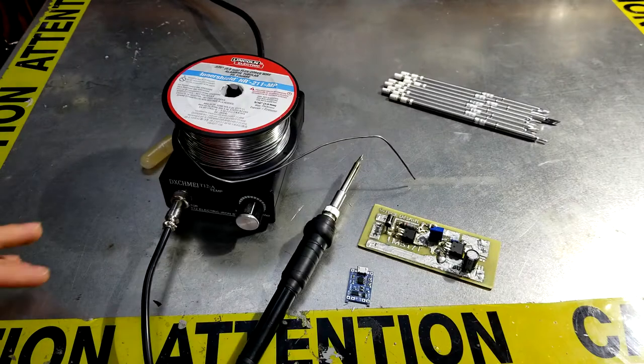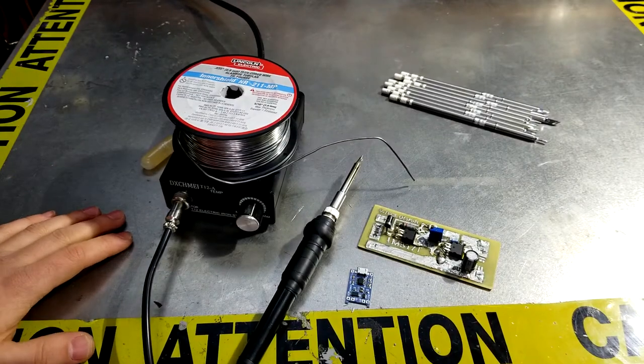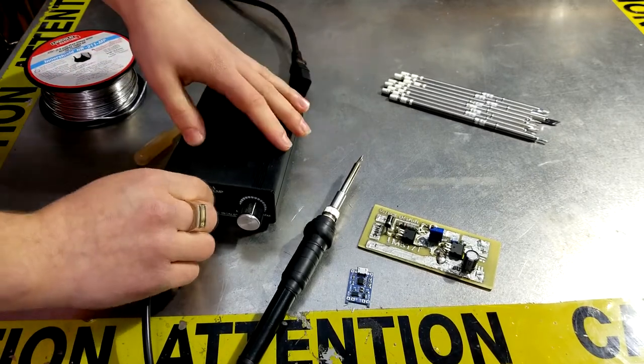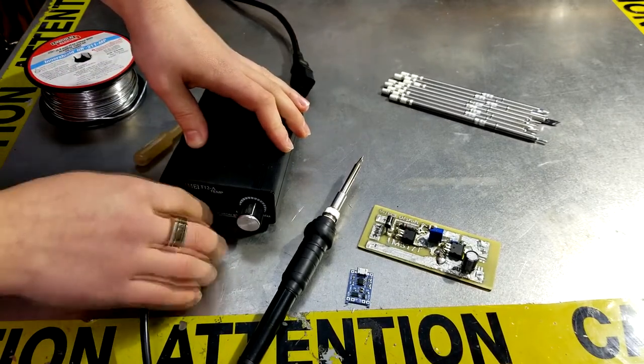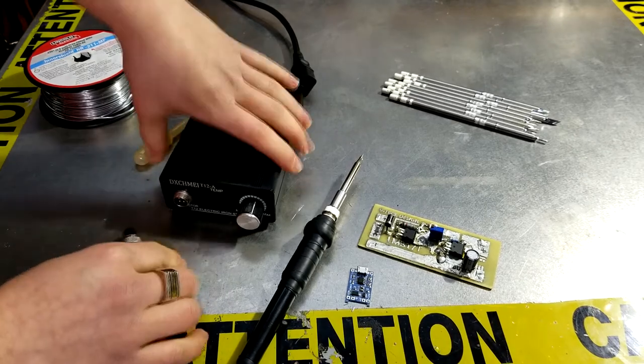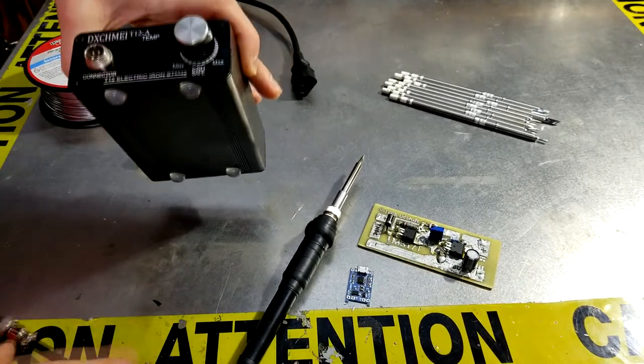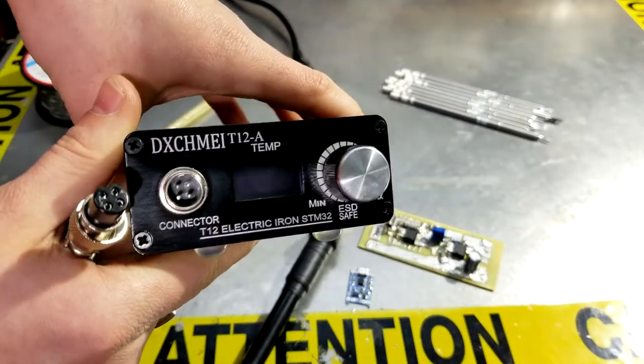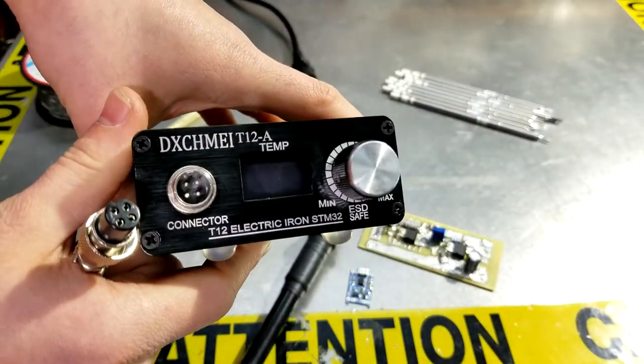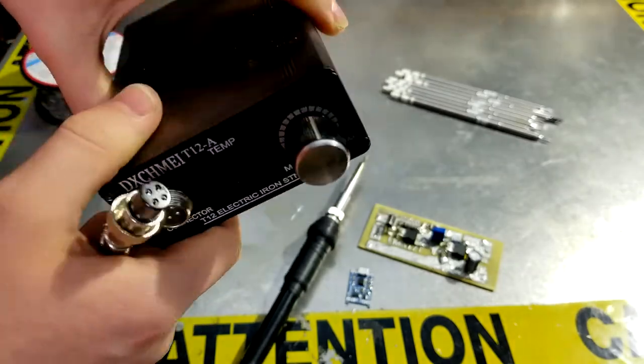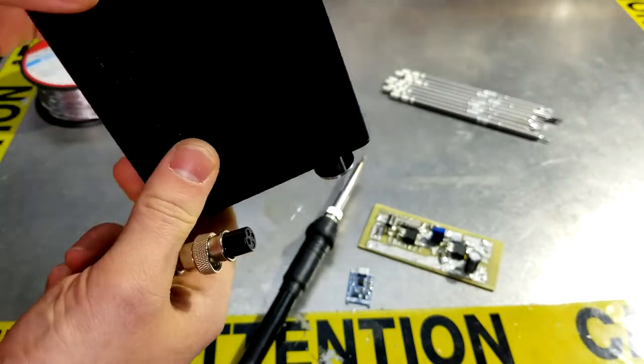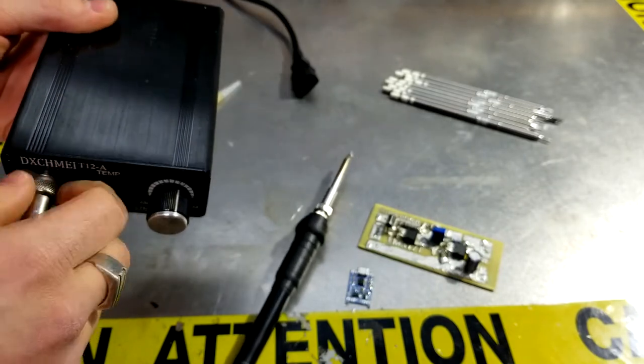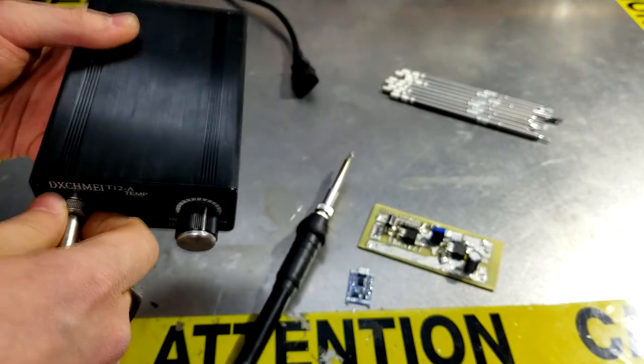So essentially what this is, is a soldering iron that retails on eBay for about $90 Canadian dollars. It's a unit like this. If you guys want to Google this, there you go. This particular one claims to be a 75-watt unit, which means you can have 75 watts coming up from this tip really fast.